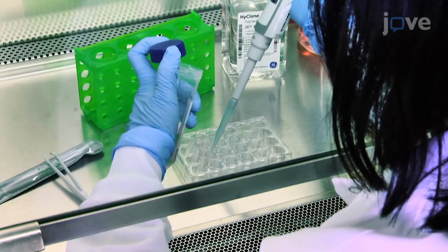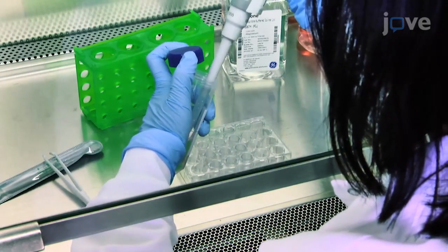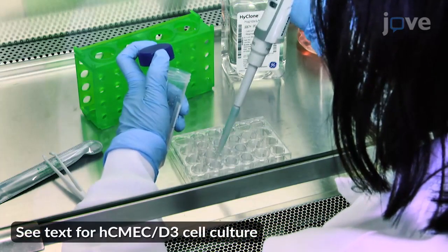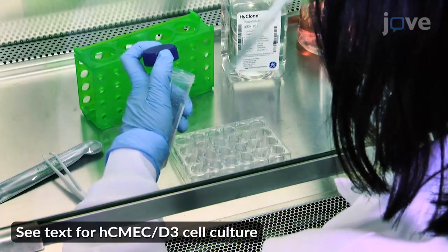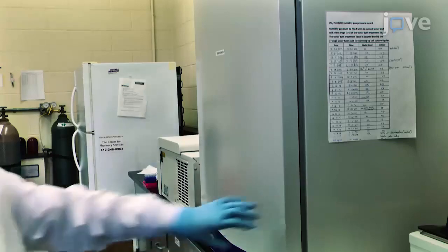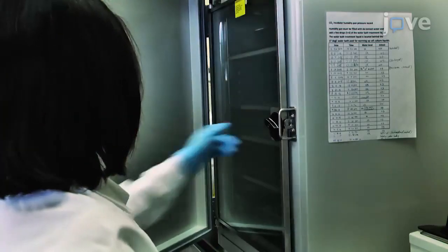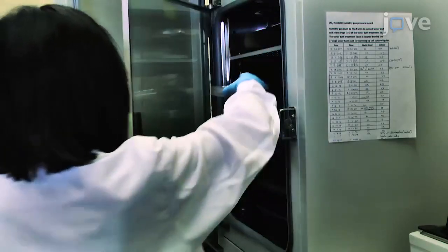Now, plate HCMEC D3 cells with a density of 50,000 cells per square centimeter in the cell inserts. Place the 24-well plate with tissue culture setup in the incubator to allow cell attachment and proliferation.